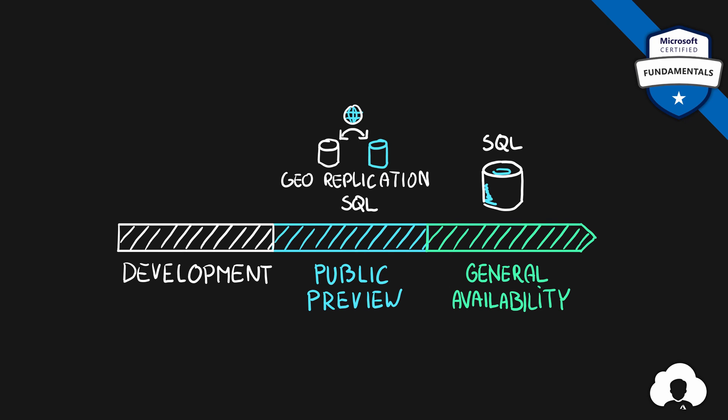So it's entirely possible to use a service that has been GA'd a very long time ago, like Azure SQL for instance, that still has certain features in public preview — for example, geo-replication. So you always need to be aware if the service and features you're using are already available for general use, for production use.